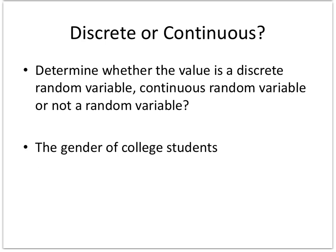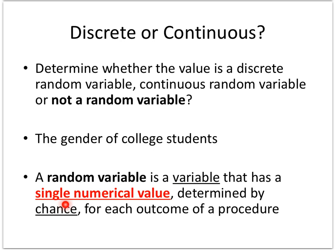The gender of college students. To our definition, it must be a single numerical value. Gender is not a number, so this would be not a random variable.